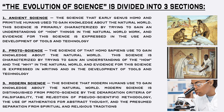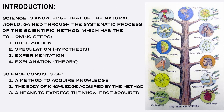And three: modern science, the science that modern humans use to gain knowledge about the natural world. Modern science is distinguished from proto-science by the demarcation criteria of falsifiability, the rejection of pseudoscientific methodology, the use of mathematics for abstract thought, and the presumed separation from spiritual and religious traditions.